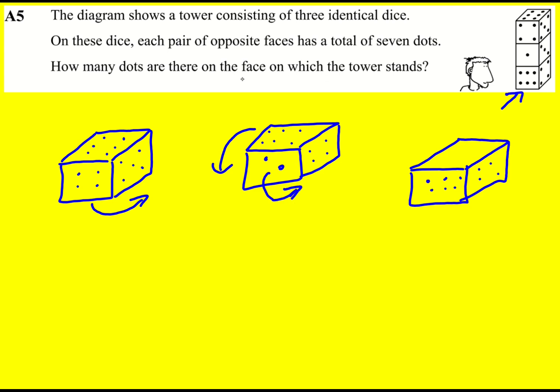Hence that is going to be the dice on the bottom. So how many dots are on the face on which the tower stands? It's going to be this two on the bottom here. Two dots.